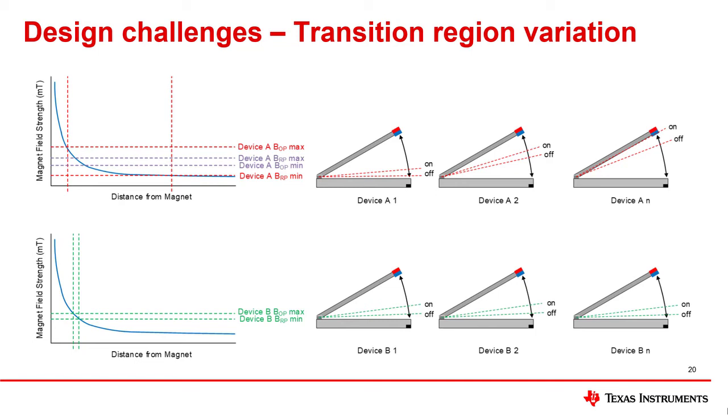As you can see with device A, there is a wide region of variation from either BOP or BRP in the graph, which means one laptop with device A might have the lid nearly closed for both on and off transition points, while another laptop with device A might have the lid at nearly 45 degrees for both on and off transition points.